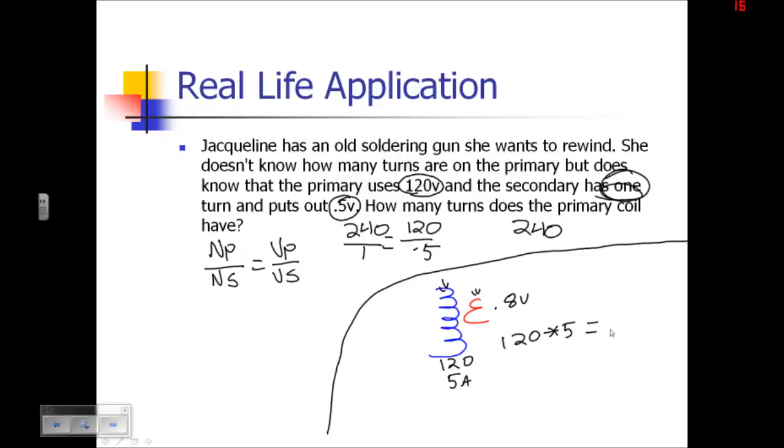It's going to be equal to 0.8 times the number of amps it can provide. So you do 120 times 5 divided by 0.8 will give us 750. So this means this secondary coil can provide 750 amps. So the energy from the primary is not lost, it's still there, it's just been converted into amps instead of volts.